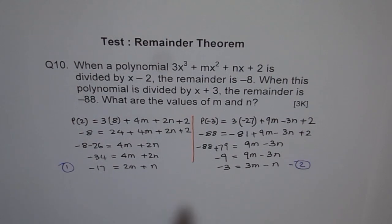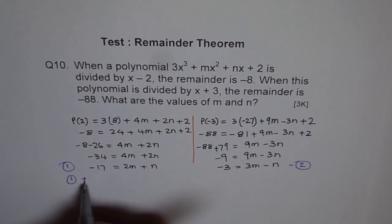Now from these two equations, we can find two variables. So we have 3m - n, 2m + n. Let's add them. So if I add equation 1 and 2, what do I get?